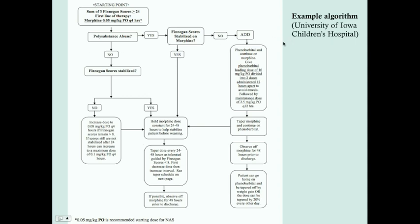An example algorithm from the University of Iowa starts with a diagnosis of neonatal abstinence syndrome. If there is polysubstance abuse, phenobarbital can be considered. If Finnegan scores are stabilized, continue morphine; if not, increase the morphine dose. Phenobarbital is added if there is still no stabilization. Because there is no agreement on which drug is best, the USMLE is unlikely to ask you to choose between morphine and phenobarbital specifically — but if both appear as options, choose one of those two.